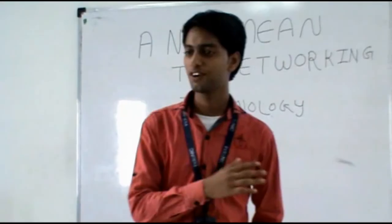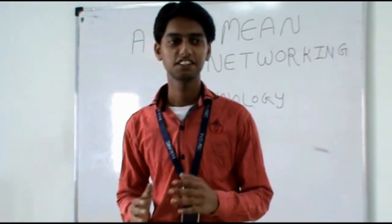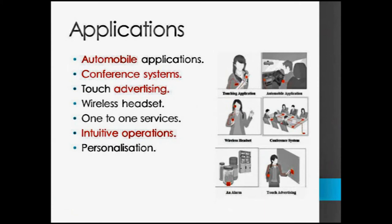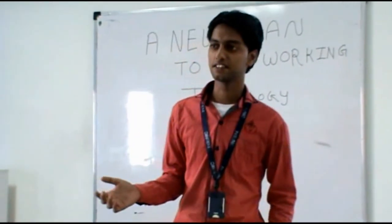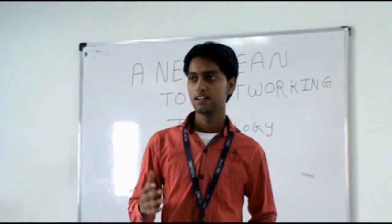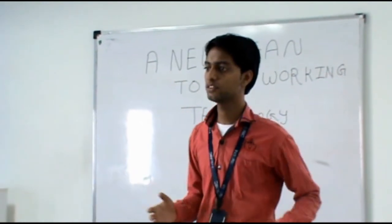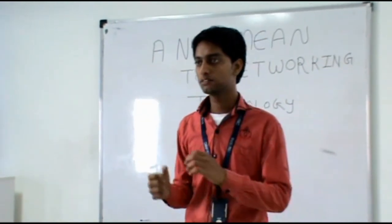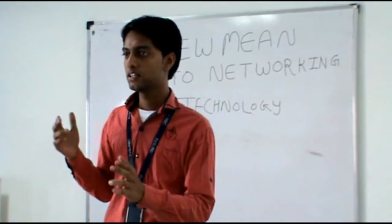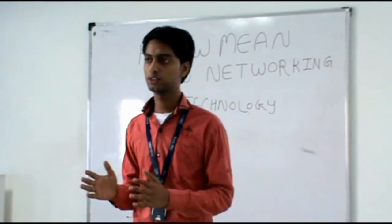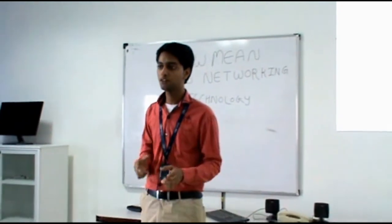Applications — this is the most interesting part of any technology. What are the applications we can use? Military applications: in the military, there are many guns and arms that are stolen or sold in gray markets. To prevent such acts, they can use this technology — a transmitter on a gun or any arm, and another transmitter on the body of a soldier — so only that particular soldier will be allowed to use that gun.